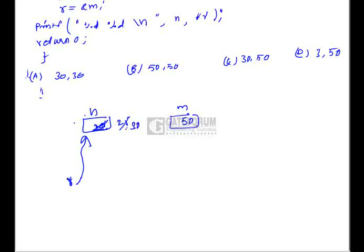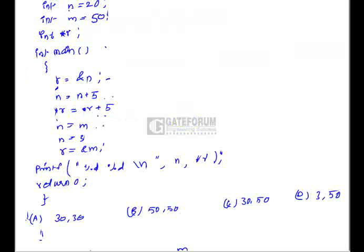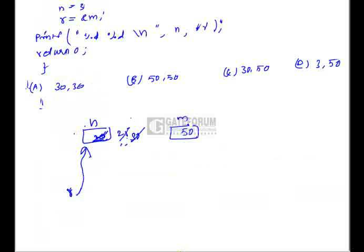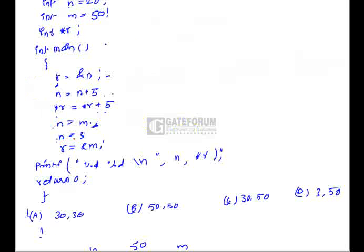Here the value of m will be stored in variable n, so n becomes 50 — the value 30 will be overwritten by 50. In the next instruction, the value of n will become 3, so 50 will be overwritten by 3. Then r is assigned the address of variable m.